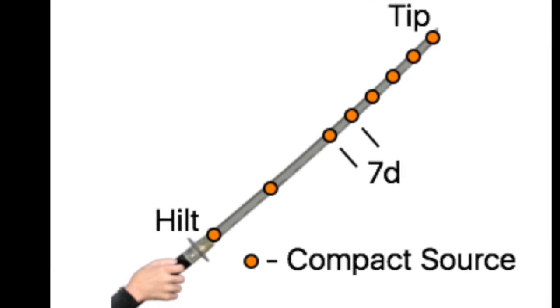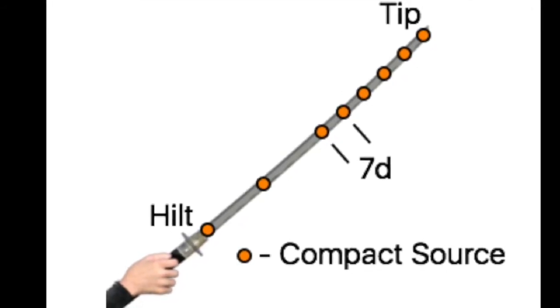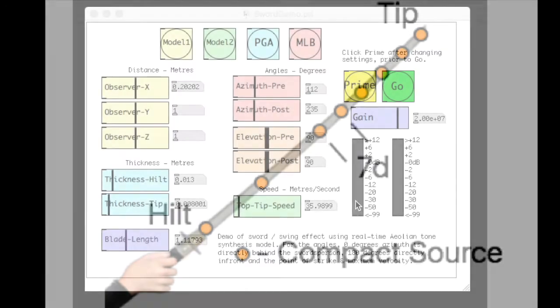Aeolian tone model is a compact sound source. By placing a number on a line, we can create a sword sound effect.